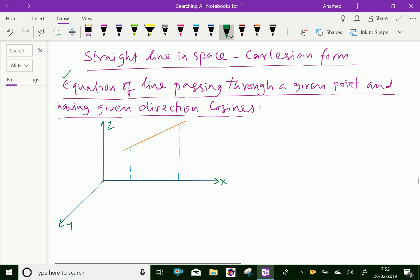The point A is here, passing through X1, Y1, Z1. Suppose point B here. Let any point on the line P have the coordinates X, Y, Z.